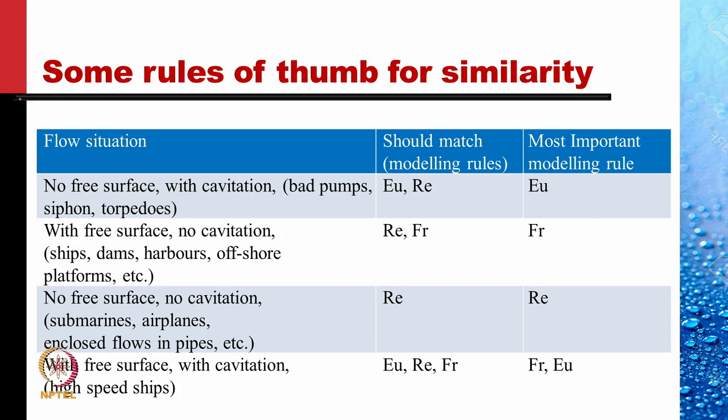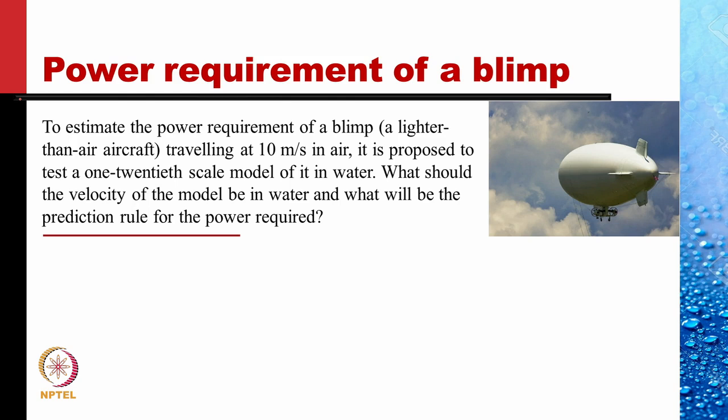Any situation where we have both a free surface and cavitation, like in high-speed ships, all three parameters — Euler number, Reynolds number, and Froude number — need to match. Let's do an example of a blimp.